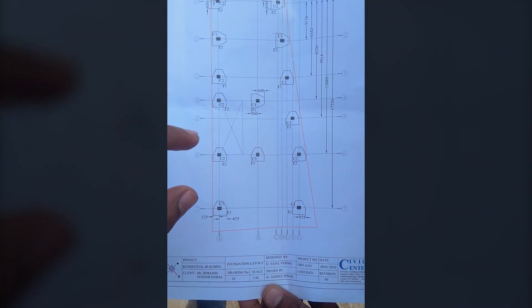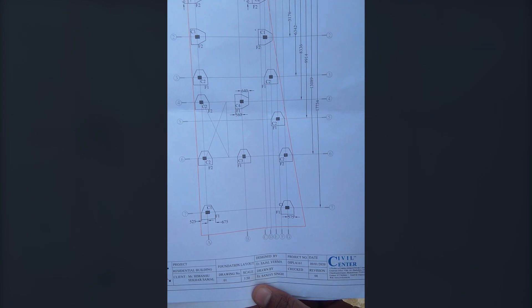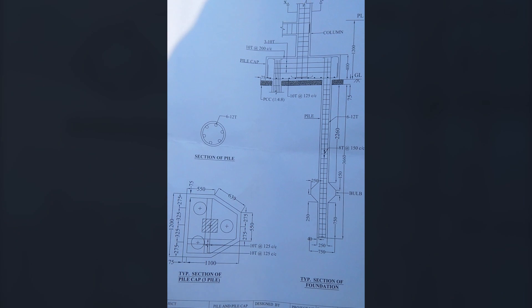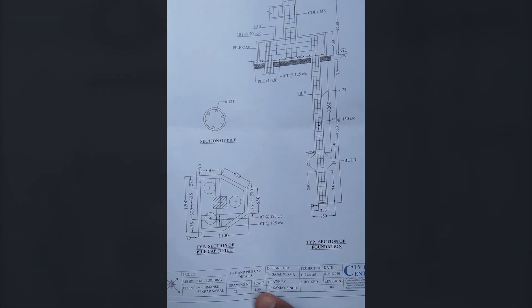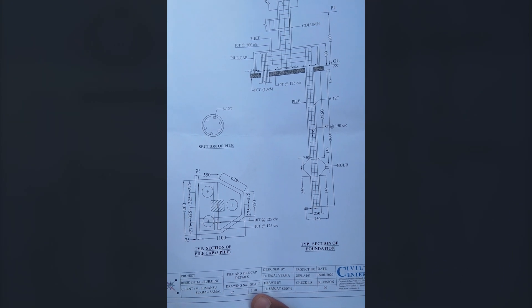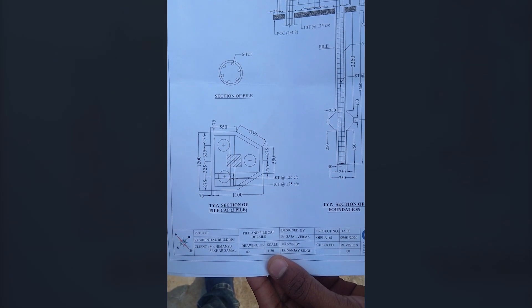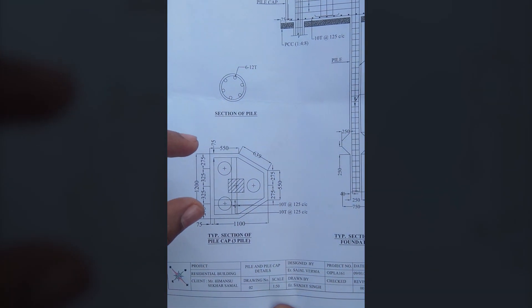That was the pile foundation layout plan. Now let us look at the next drawing, which is the pile and pile cap details. In the previous drawing we noted the center-to-center distances between all pile caps; now in this drawing we can get the detailed dimensions of each pile.